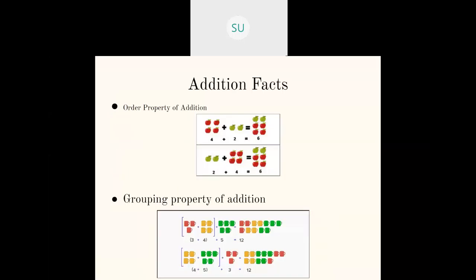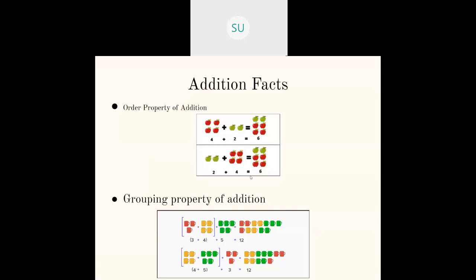In today's class we will see addition facts or properties of addition. The first is called the order property of addition. It means that when you add two numbers in any order, your final total or sum will be the same. For example, 4 red apples plus 2 green apples gives 6 apples. Even if you add 2 green apples first and then 4 red apples, you still get 6 apples. So whatever order you add any two numbers, the final sum remains the same. This is the order property of addition.